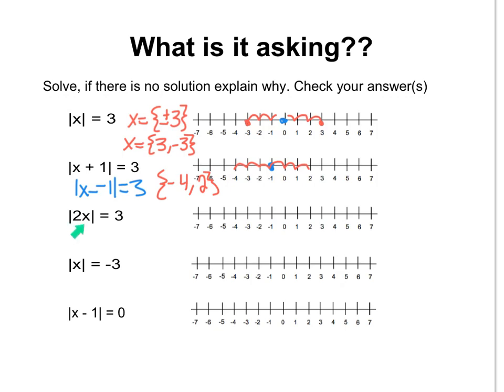The next one says 2 times some number is 3 units away from zero. So I could have the positive or negative value, but I know that I want 2 times 3 over 2 in order to give me 3. And I could have that be positive or negative, because I don't care if I get positive or negative since we're taking the absolute value.